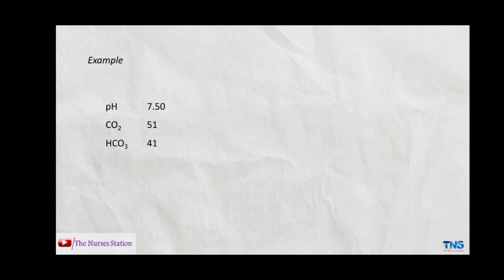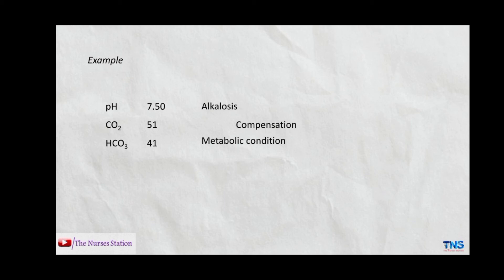Another example: pH 7.50, CO2 51, and HCO3 41. The pH is more than normal so the patient is having alkalosis. HCO3 is 41, which is more than normal, indicating a metabolic condition — so metabolic alkalosis. The elevated CO2 above the normal range means the body is trying to compensate for the alkalosis. Since the pH is out of normal range, this is partial compensation. The patient has metabolic alkalosis with partial compensation.